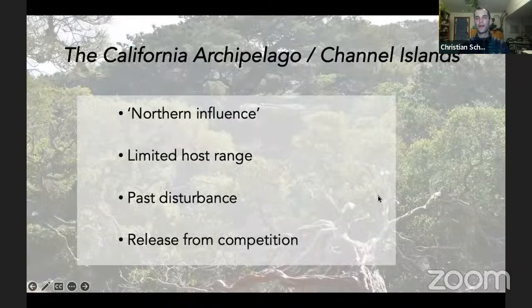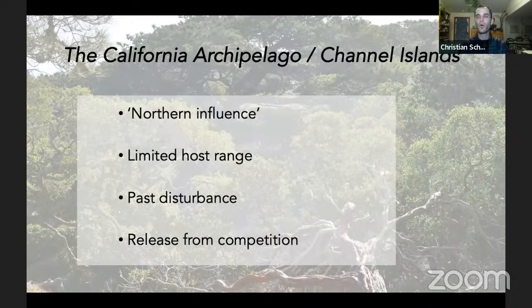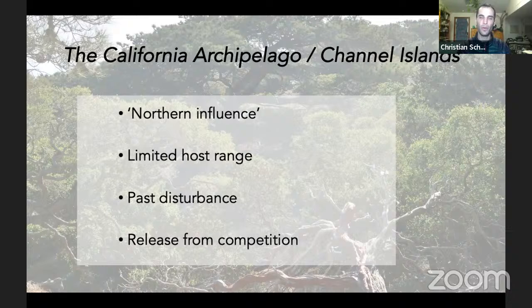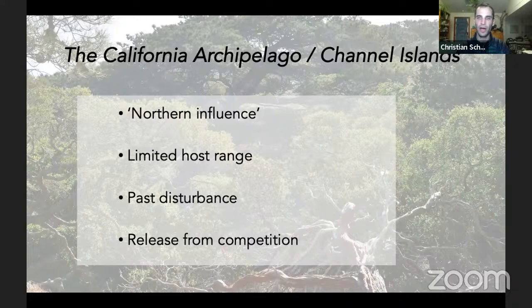How do we characterize the California Archipelago geographically? They feel more northern than they are. If you draw a straight line from any Channel Island to a corresponding point on the mainland, you'll find a more characteristic assemblage of northern plants on the island, because they are more maritime — a little cooler, a little wetter. They are the first thing that storms encounter as they move in from the predominantly western storm track from the Pacific.